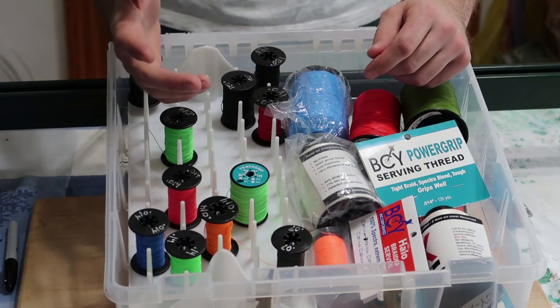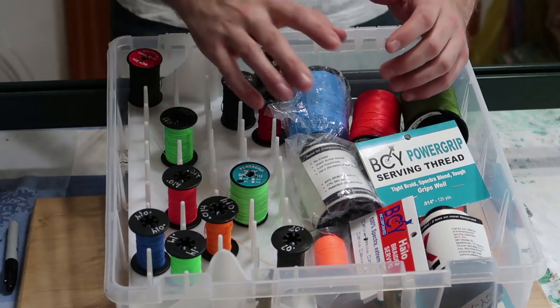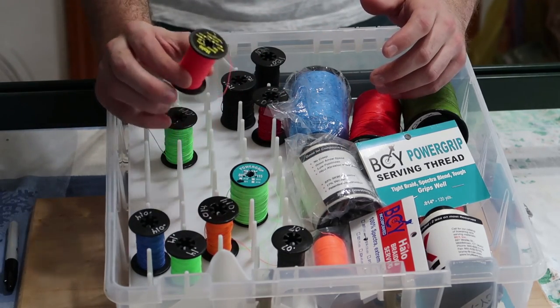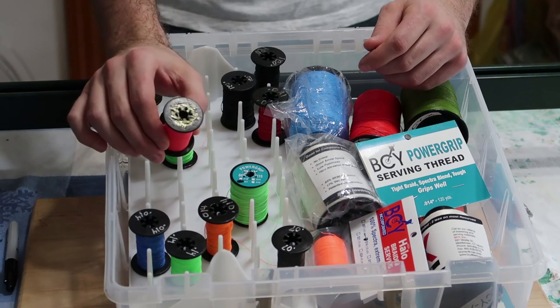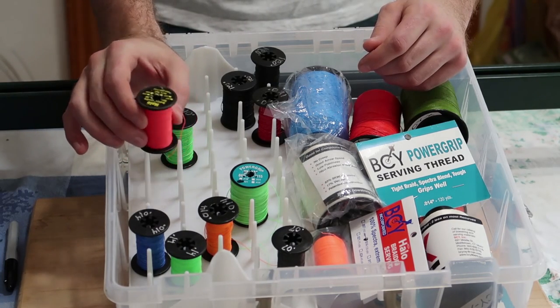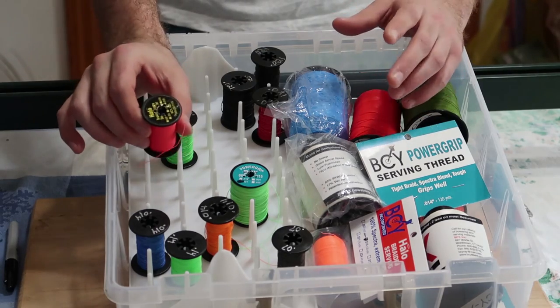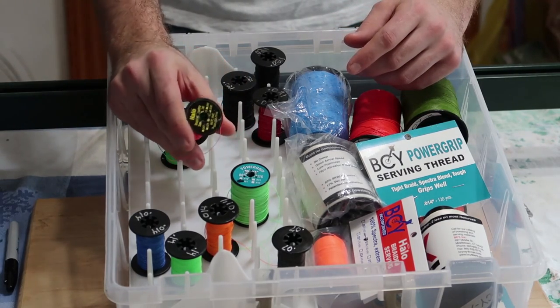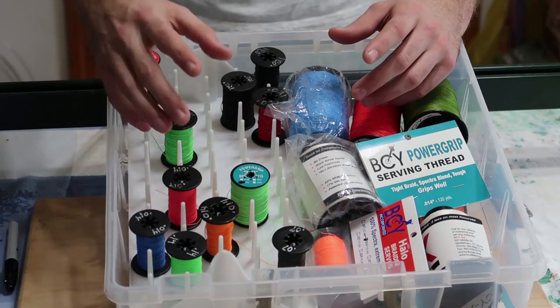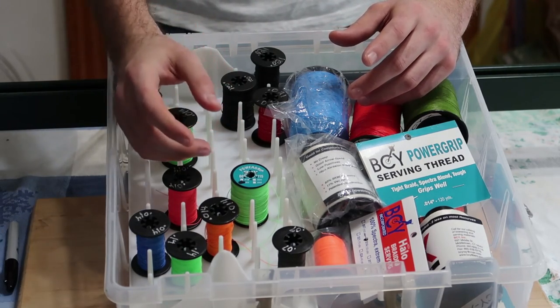Now, as you can see here, there are two different size spools. These smaller spools are serving. This goes on top of your bowstring. For the most part, I have two kinds of serving: halo and power grip. I number them in order to keep track of the thickness of the strand.